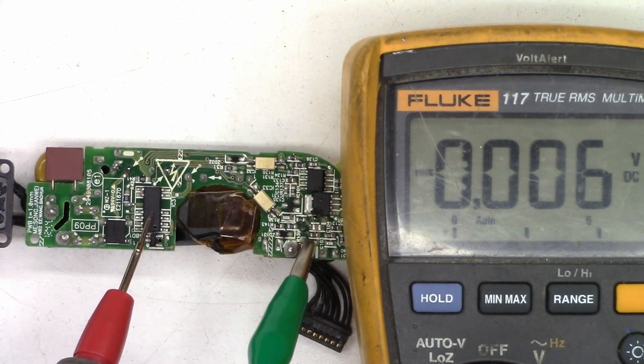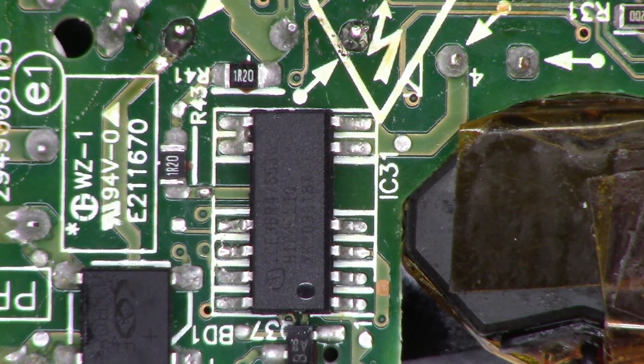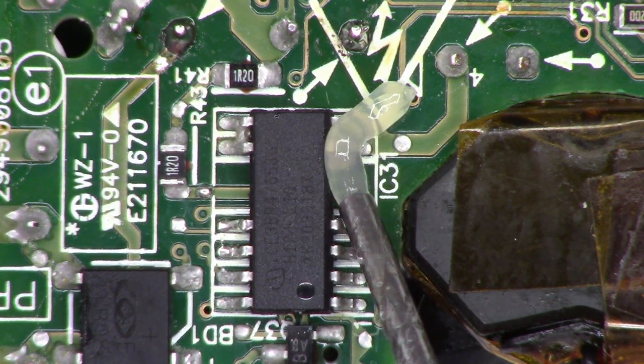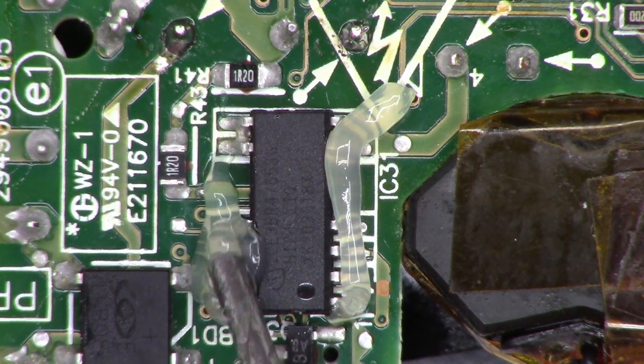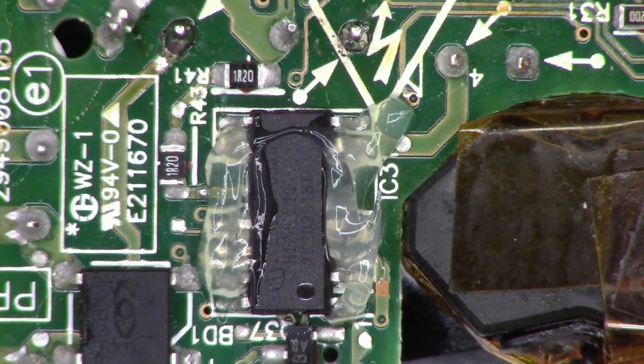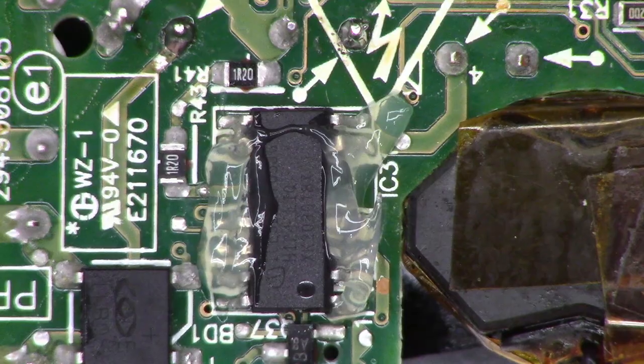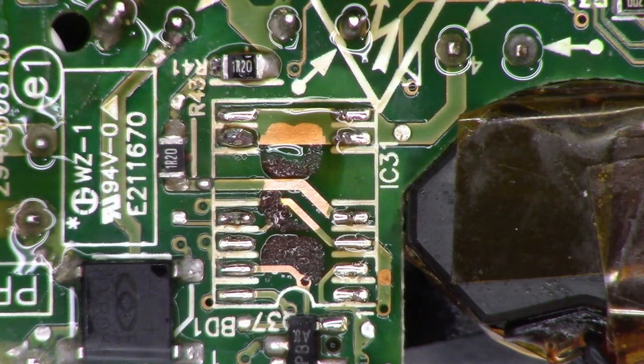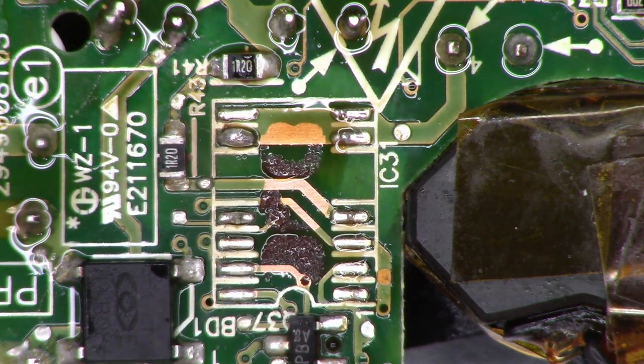I'm just going to add a little bit of flux. Helps the solder to melt easier and flow better. And the chip is off the board. It was glued to the circuit board, so I had to get the chip hot enough to melt that epoxy to get it off.